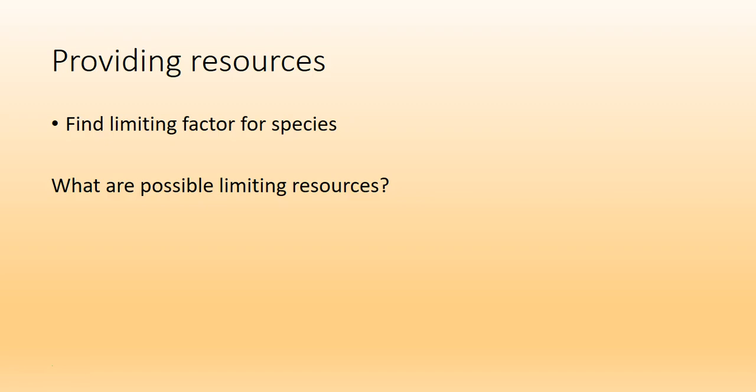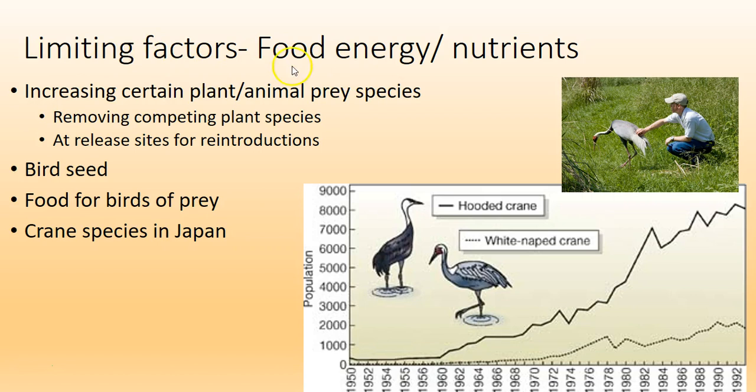Food is a factor that we might need to manage for. What you're doing is giving more of the food resource for that species, and if that truly is the limiting factor, their population should go up. You can remove competing plant species — especially invasives — to allow native food plants to grow. Oftentimes you'll see this done at reintroduction sites where giving stressed creatures extra food gives them a better likelihood of surviving.